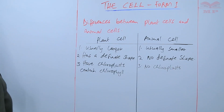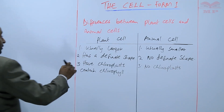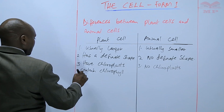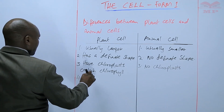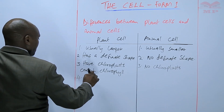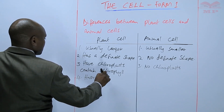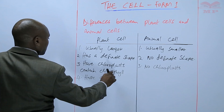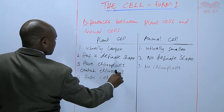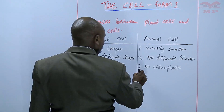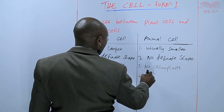In terms of the cell wall, plant cells have a cell wall. Animal cells have no cell wall.